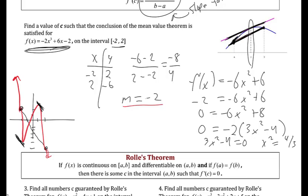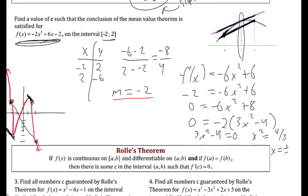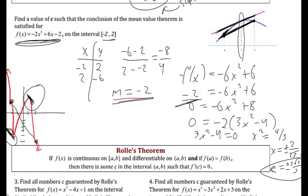Taking the square root of both sides — don't forget plus or minus — gives x = ±2/√3, which is ±2√3/3 when rationalized. Checking in the calculator at x = 2√3/3, I was actually pretty close in my visual guess. At x = -2√3/3, also very close. These are the c values — the x values where the slope is -2, which is the average slope between the two endpoints.